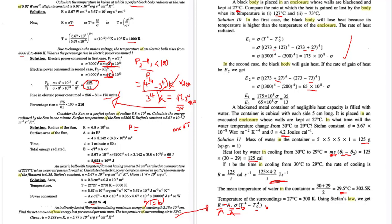The power lost: area of the cubical container — 6 sides, each 5 × 5 cm — so surface area = 6 × 5 × 5 = 150 cm². Times Stefan's constant of 5.67 × 10^-8. Convert the mean temperature (29.5°C) and surrounding temperature (27°C) to Kelvin by adding 273. The mean water temperature becomes 302.5 K and surrounding is 300 K. Then T_body^4 − T_surrounding^4 gives the power.